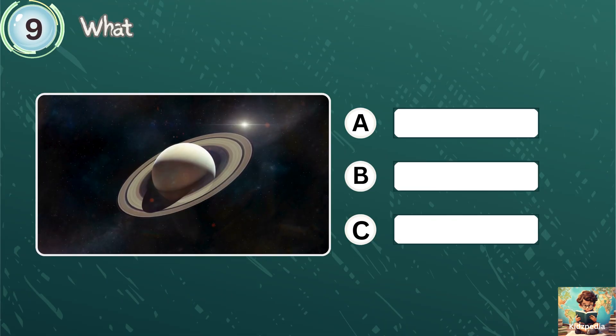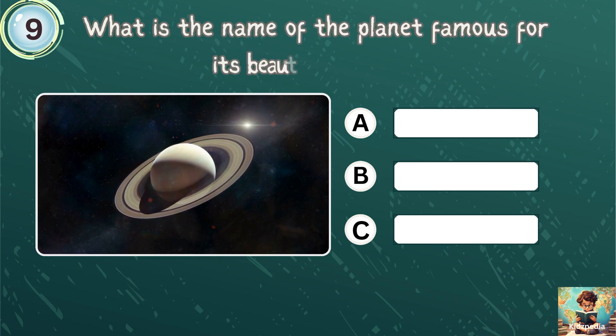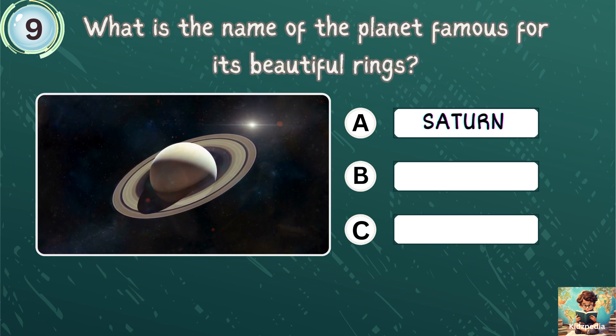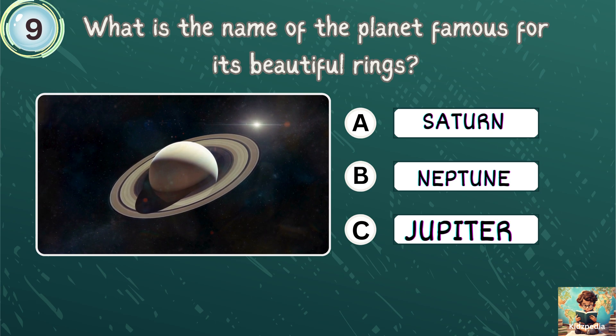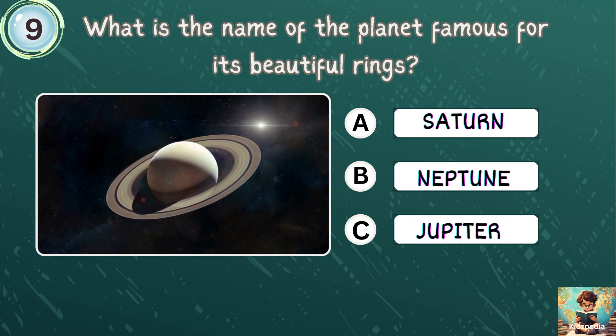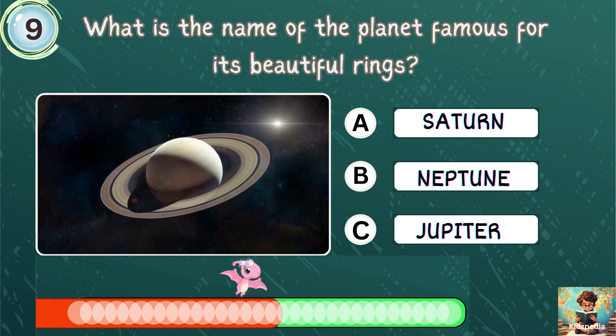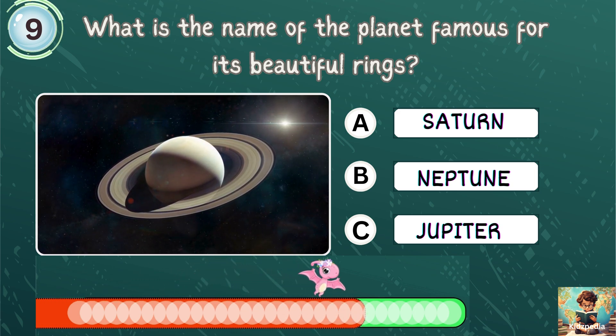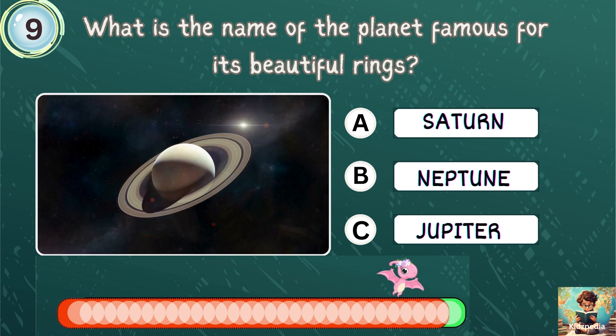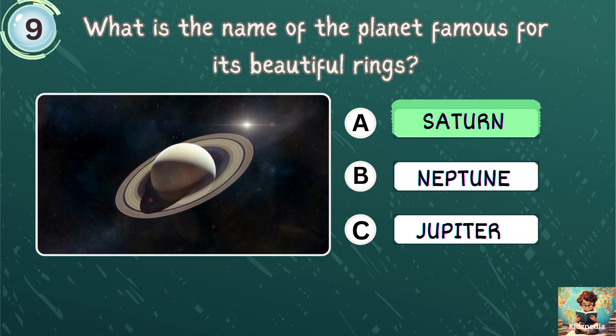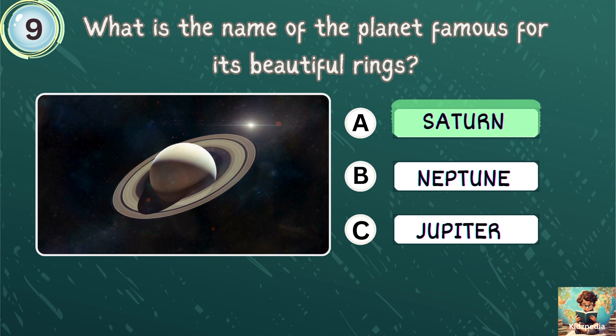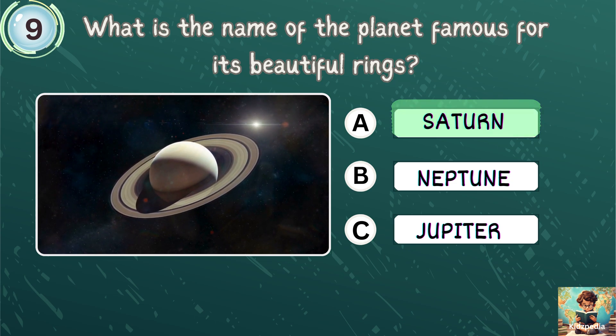What is the name of the planet famous for its beautiful rings? Saturn, Neptune, Jupiter. Yes. Saturn is the correct answer. Saturn is known for its beautiful rings.